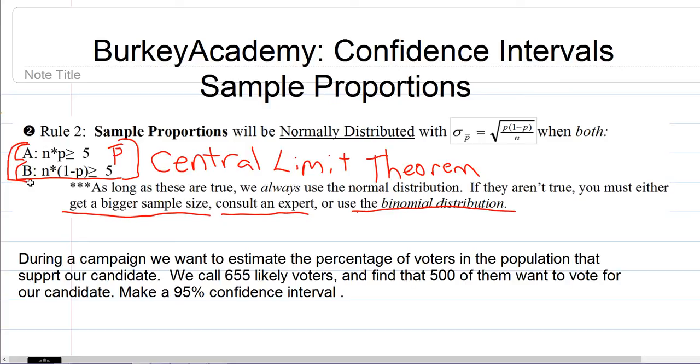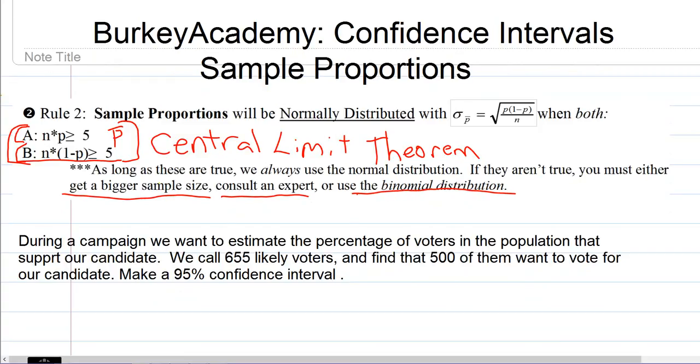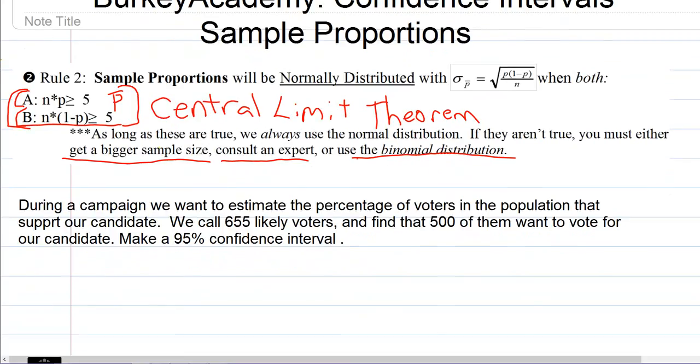Here is a standard example problem. During a campaign we want to estimate the percentage of voters in the population that support our candidate. We call 655 likely voters and find that 500 of them want to vote for our candidate. Make a 95% confidence interval.